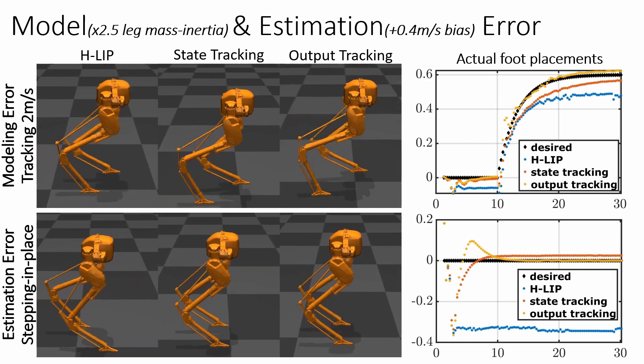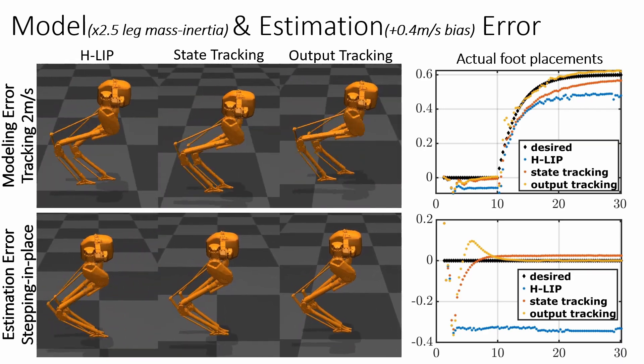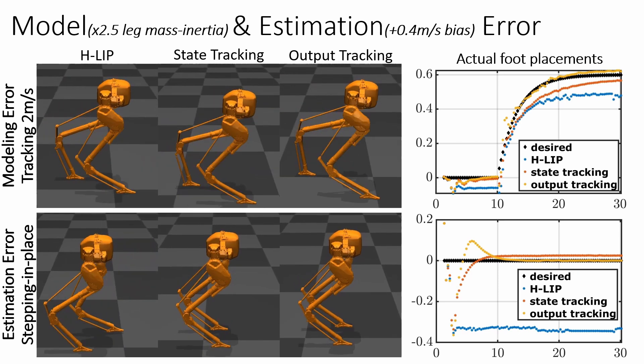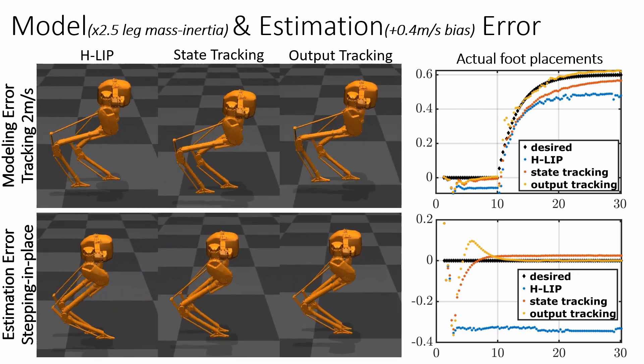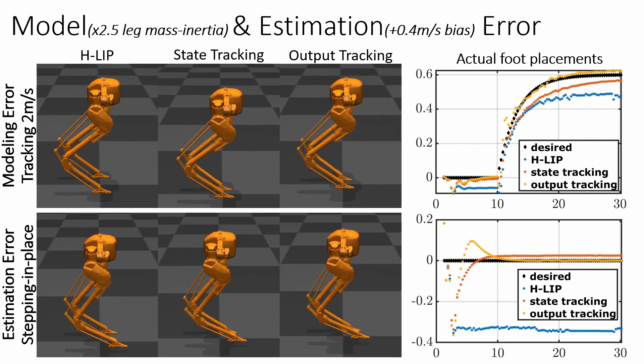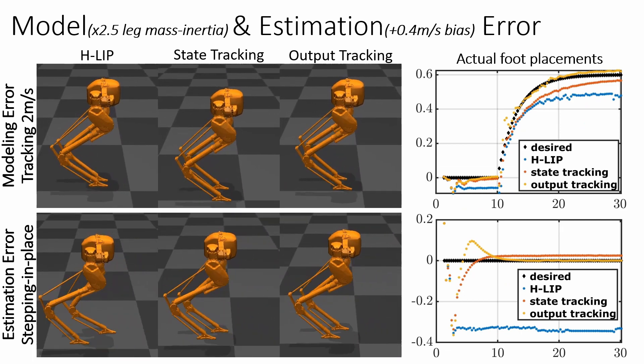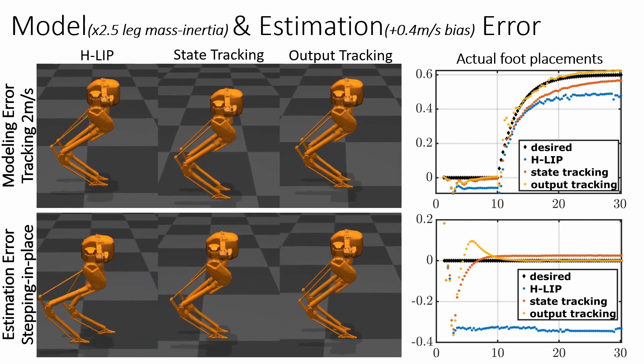With now a set of much heavier limbs that's again unknown to the low-level controller, an error between the commanded foot placement and actual foot placement occurs. In this case, incorporating output tracking error provides even better performance. Similar things happen to the biased estimation case shown at the bottom, where the robot is commanded to step in place.